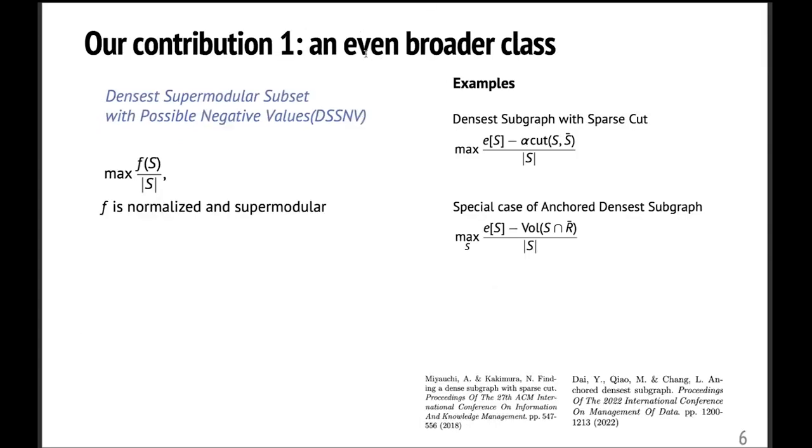And our first contribution is that we consider an even broader class of problems, which is called densest submodular subset with possible negative values, or in short, DSSNV. Basically, we are still optimizing the same objective. But here, we drop the assumption that F is non-negative. So this simple extension will include more variants of densest subgraph. Here, I list two examples to illustrate it. One is the densest subgraph with sparse cut, and the other one is the anchored densest subgraph.